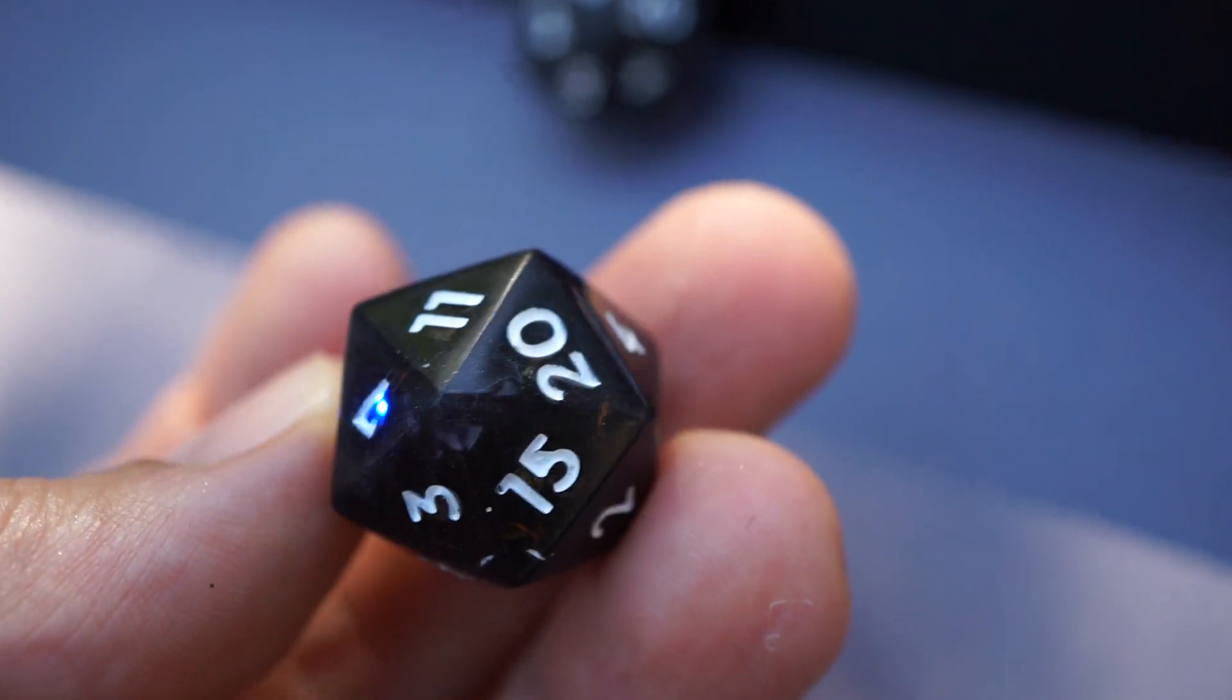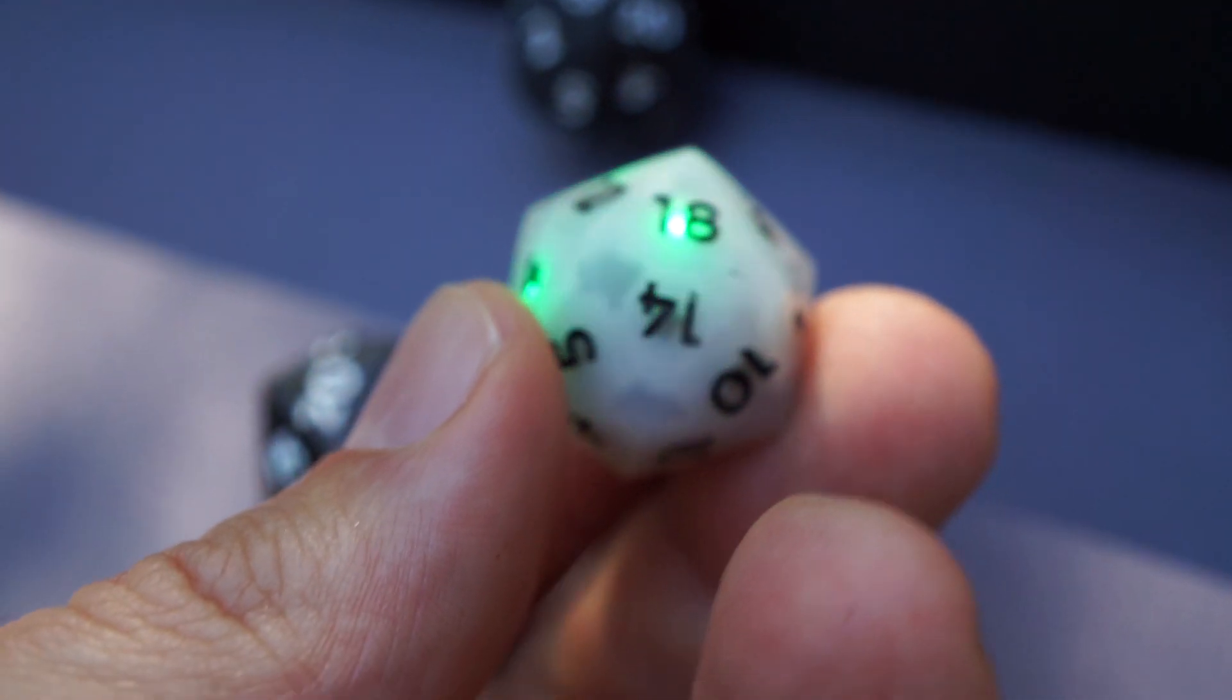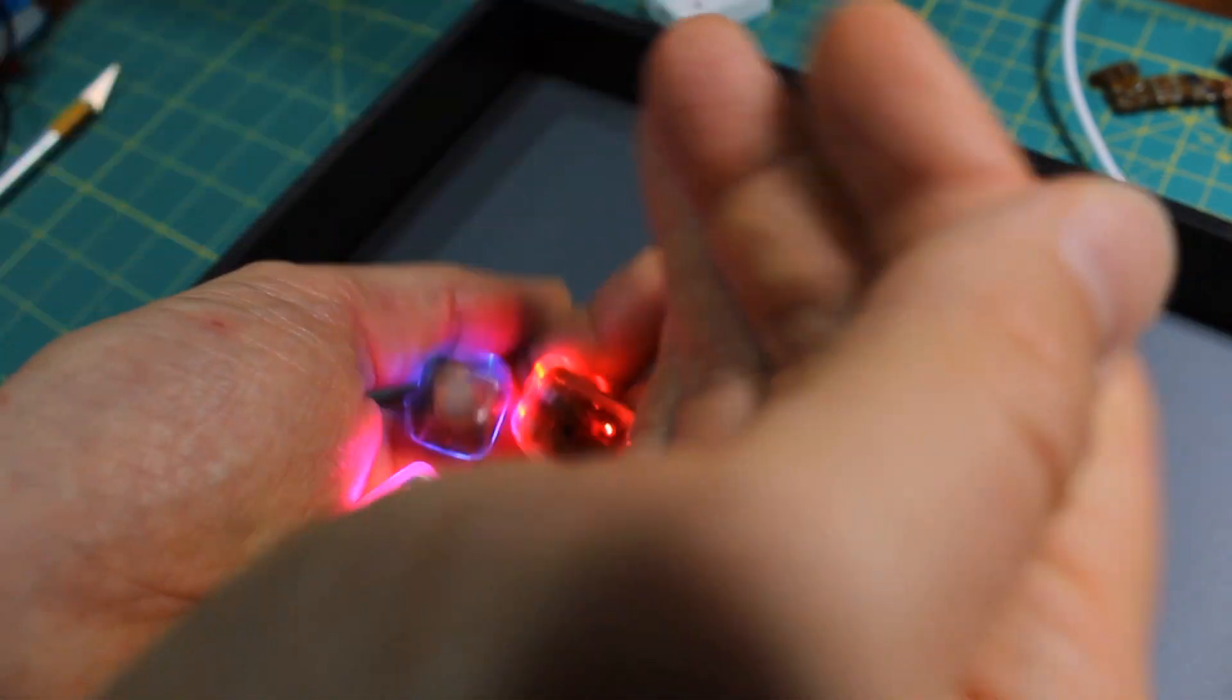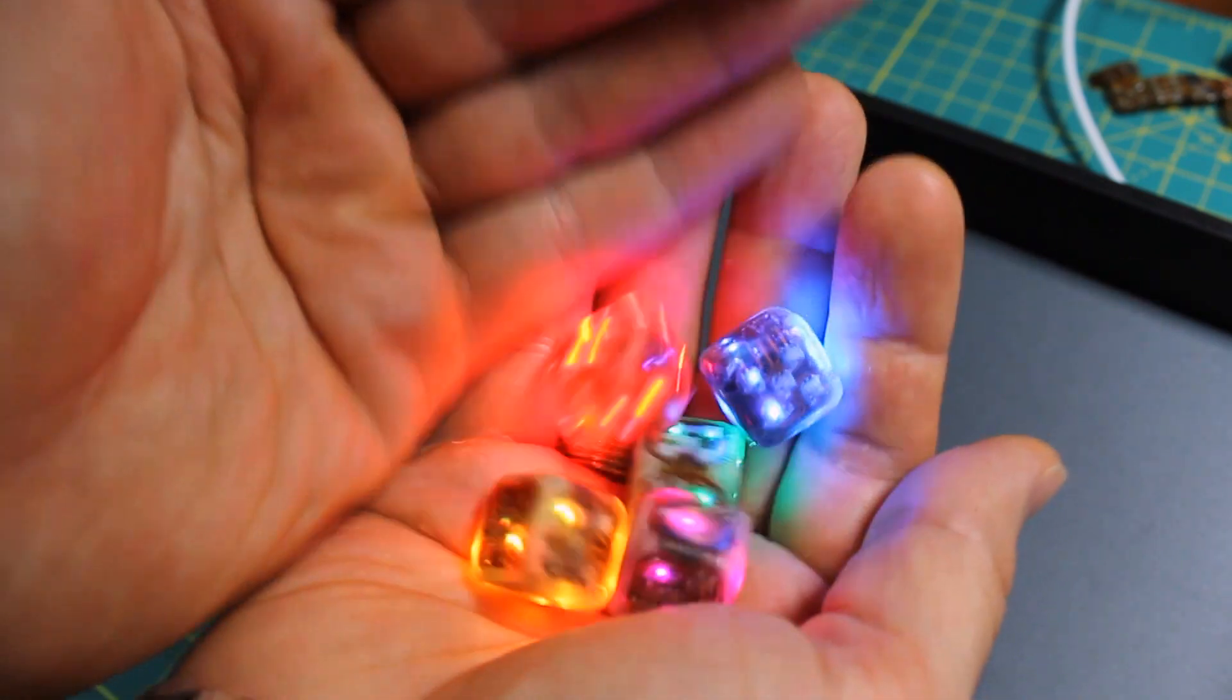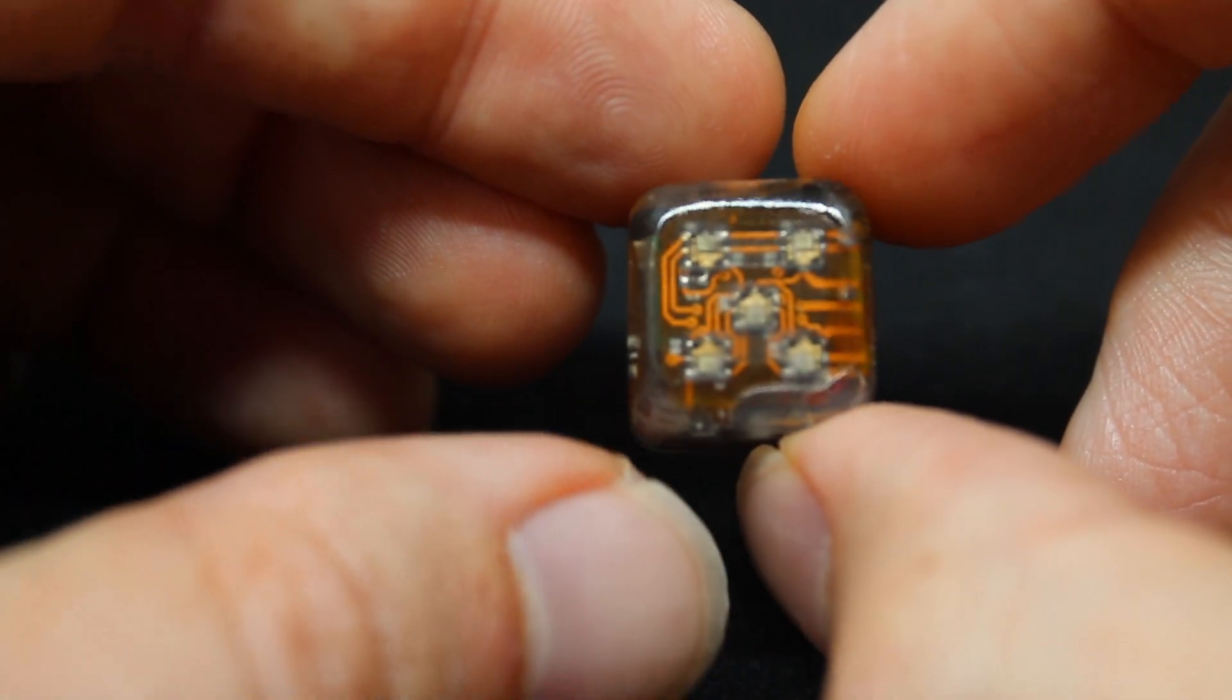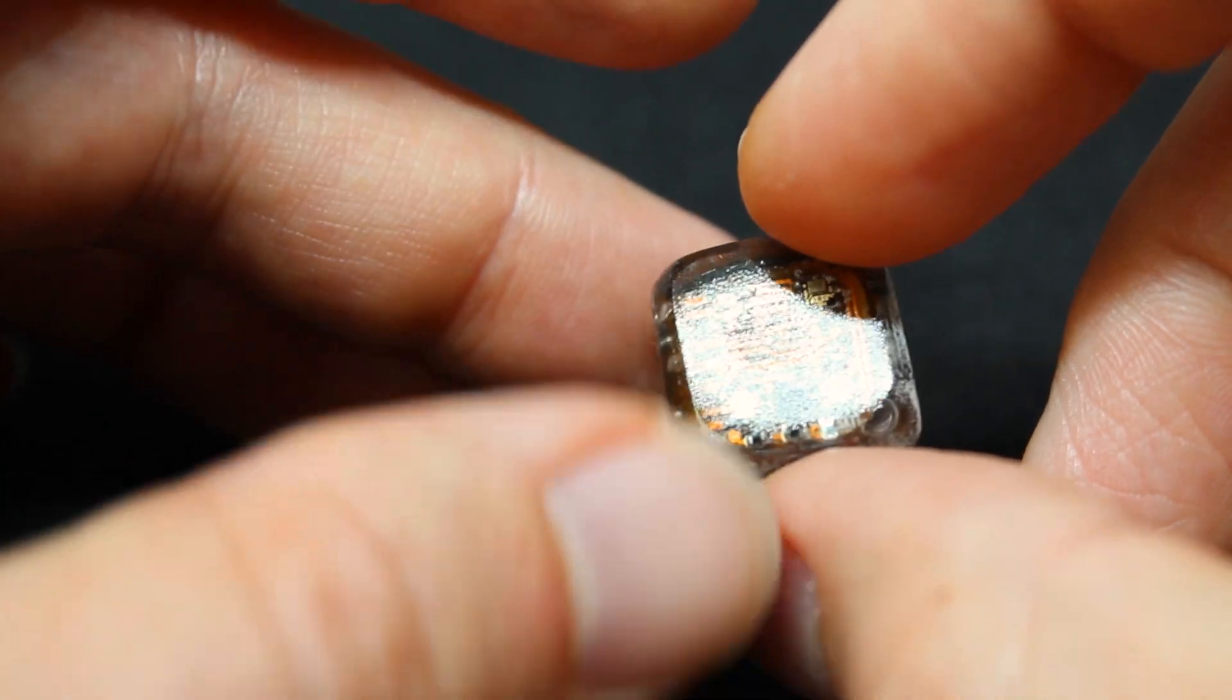What makes these electronic dice different is how much they are like regular dice. From the dimensions to the materials, they feel and handle just like regular dice. And that wasn't something particularly easy to achieve. But it is my belief that if these are going to be successful, then this is the way. Offering something new without taking anything away or adding any friction to an existing experience.